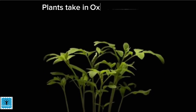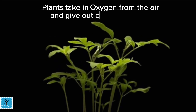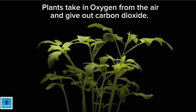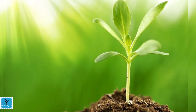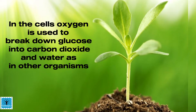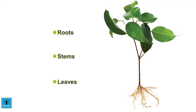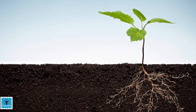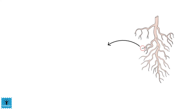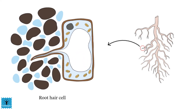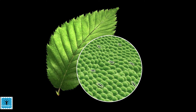Like other living organisms, plants also respire for their survival. They take in oxygen from the air and give out carbon dioxide, which is used to break down glucose. In plants, each part can independently take in oxygen and release carbon dioxide. The roots of plants, located underground, take in air from spaces and gaps between soil particles, and the oxygen absorbed is used to release energy.